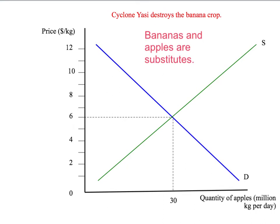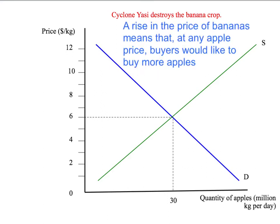We need to note that in Australia, bananas and apples tend to be substitutes for each other. What does this mean? Well, if bananas and apples are substitutes, this means that a rise in the price of bananas will mean that, at any given price for apples, buyers would like to buy more apples.